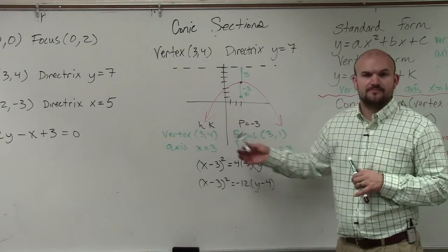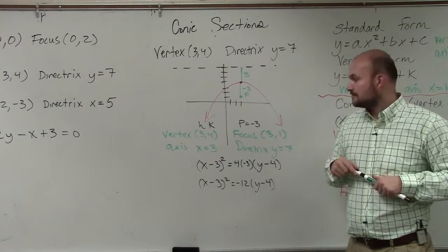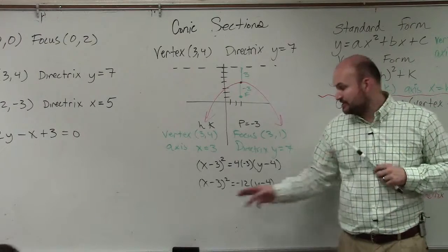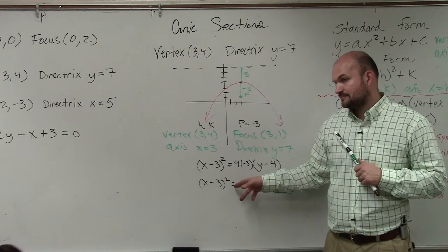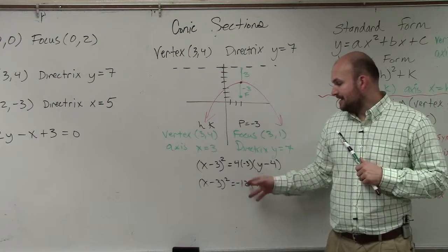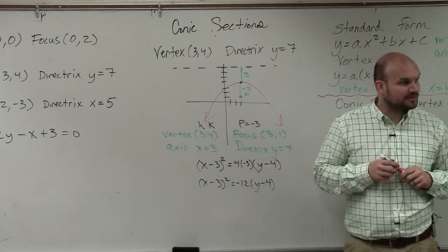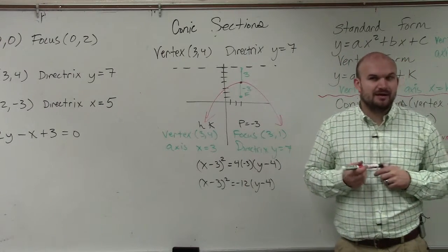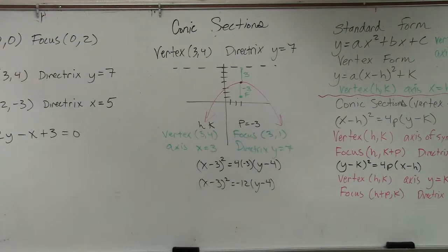This is just for the vertex. OK. Yeah. So your equation is going to be x minus 3 squared equals negative 12 times y minus 4. Does everybody see why I want to be a little bit more clear with you?